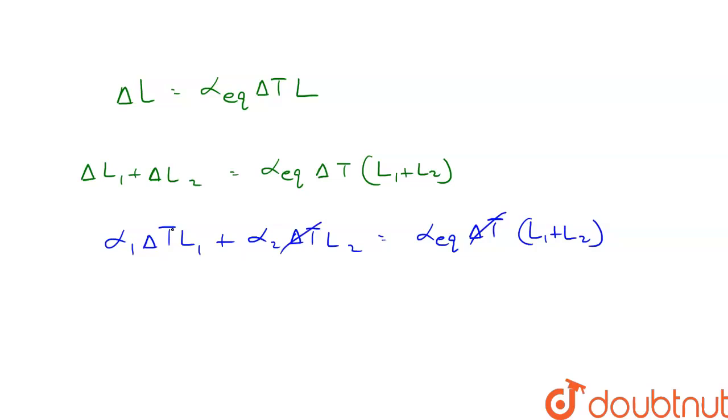ΔT can be divided from both sides, and therefore we get α_equivalent equal to (α₁L₁ plus α₂L₂) divided by (L₁ plus L₂).